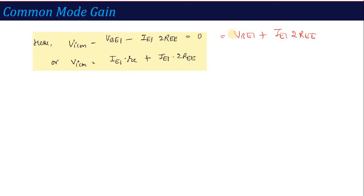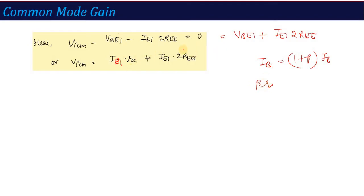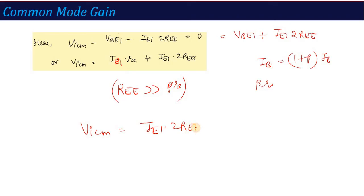Since beta times re is much much smaller than the capital REE term, the beta re term is neglected. So the equation simplifies to VICM equals IE1 into 2REE. Therefore, if we neglect the VBE drop as it is very small, VICM is approximately equal to IE1 into 2REE. So the value of IE1 equals VICM divided by 2REE.